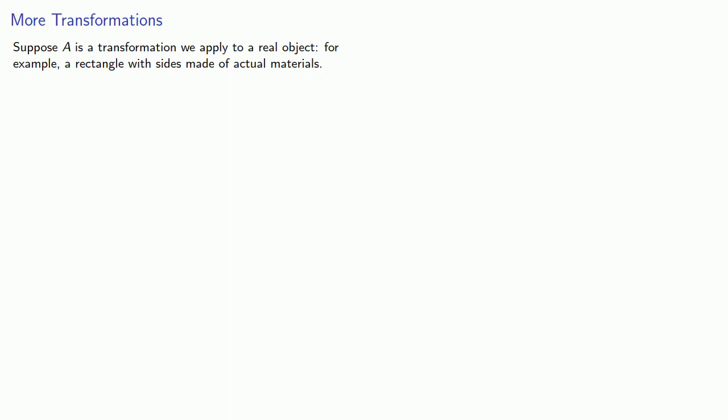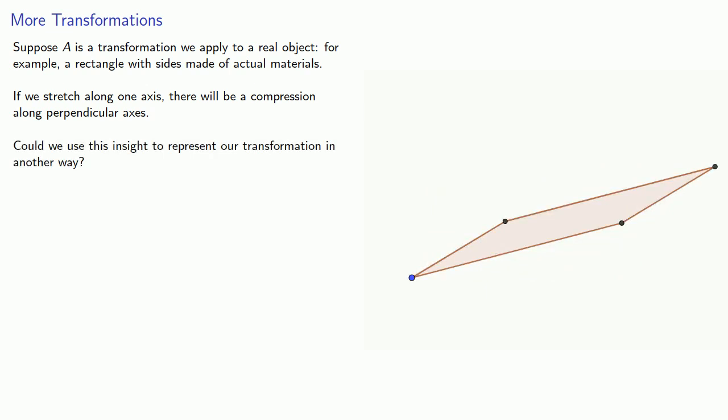Suppose A is a transformation we apply to a real object, for example a rectangle with sides made of actual materials. If we stretch along one axis, there will be a compression along perpendicular axes. Could we use this insight to represent our transformation in another way?